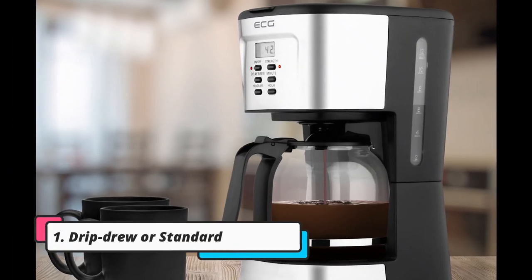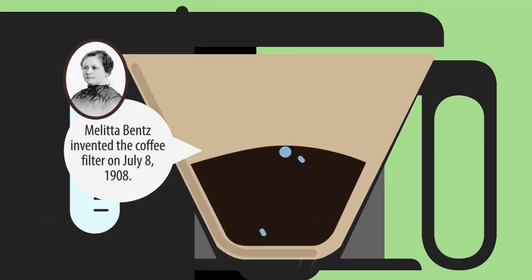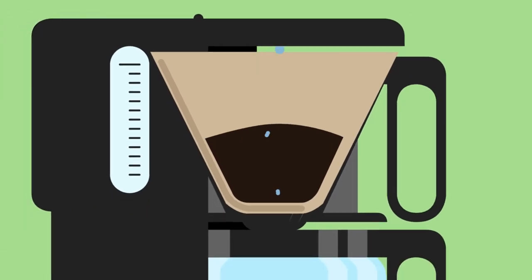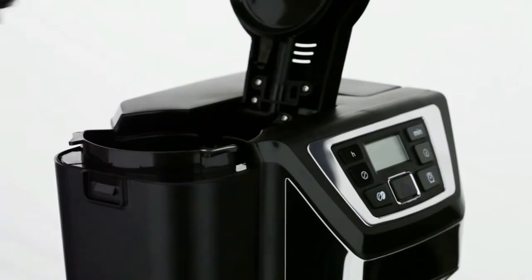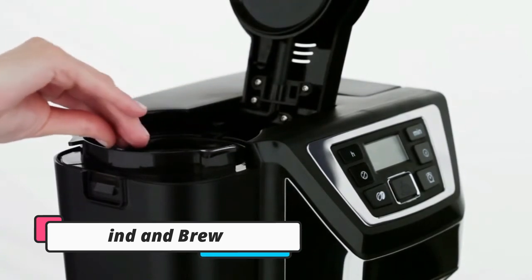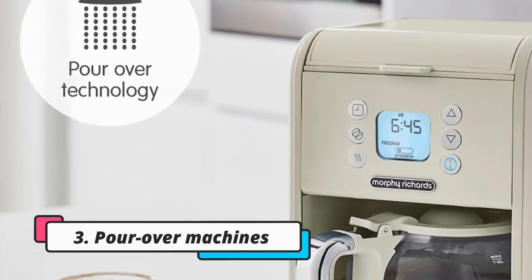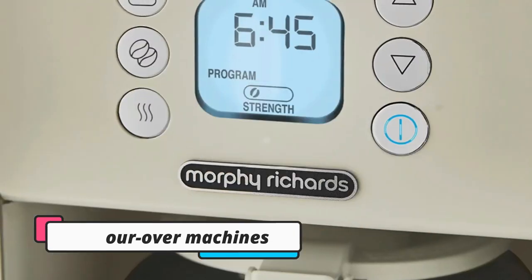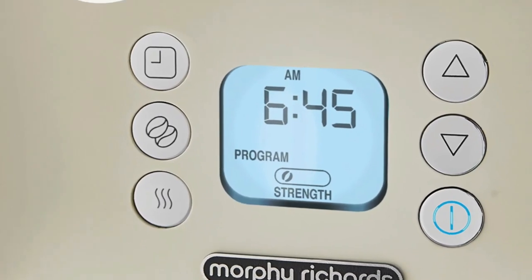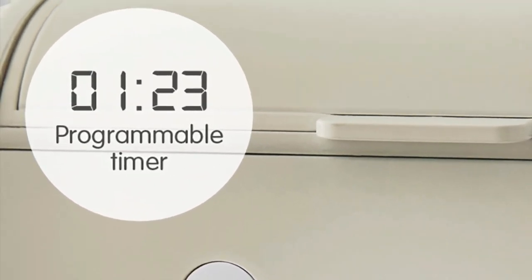First, drip-brew or standard machines that heat water that drips onto ground coffee in a filter basket to make coffee in a jug. Second, grind and brew filter machines that grind coffee beans to deliver the freshest coffee possible. Third, pour-over machines like the Morphe Richards 163007 that dispense water more gradually over the coffee grounds with the aim of producing a richer, more complex brew in the glass carafe.